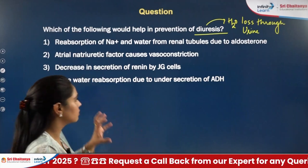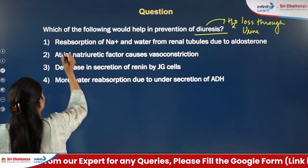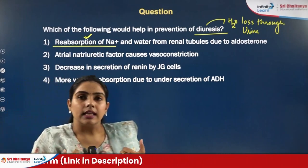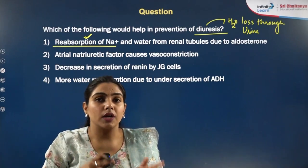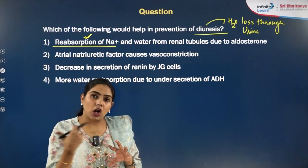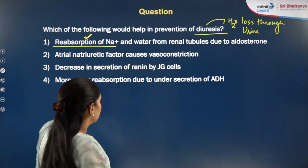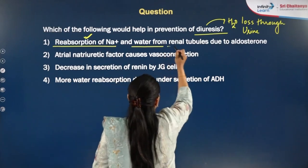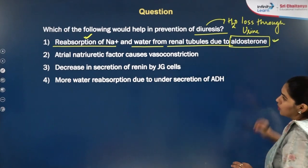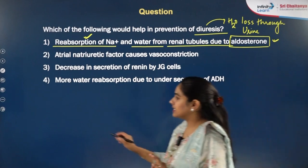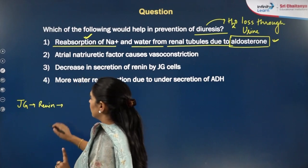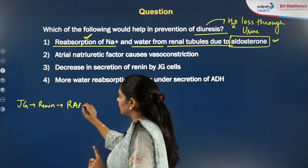Looking at the options, reabsorption of sodium is very important. If sodium is reabsorbed, it goes back into the blood from the glomerular filtrate, and passively water will also follow. This involves sodium and water reabsorption from the renal tubules due to aldosterone. JG cells secrete renin, which starts the RAS mechanism — the renin-angiotensin-aldosterone system.